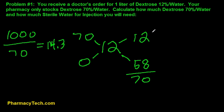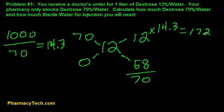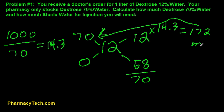Now we're going to multiply our numbers here: 12 times 14.3. And this is going to give us 172 mils. And this is going to be our volume of dextrose 70%.